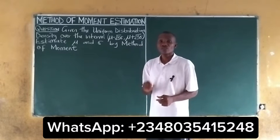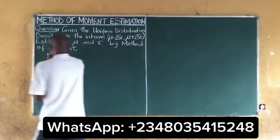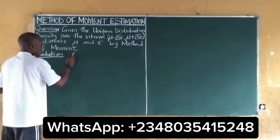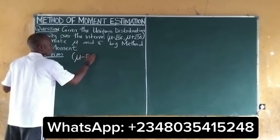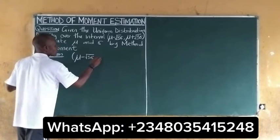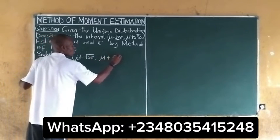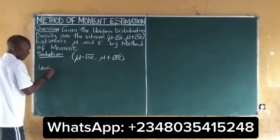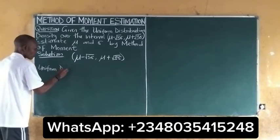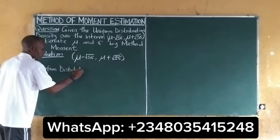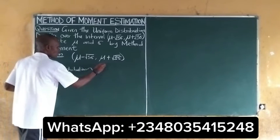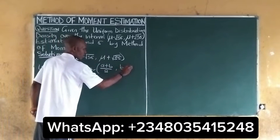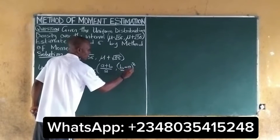For more on this topic, you need to subscribe to this channel. Our interval given is mu minus square root of 3 sigma and mu plus square root of 3 sigma. For uniform distribution, it has a mean of (a+b)/2 and variance of (b-a)² / 12.